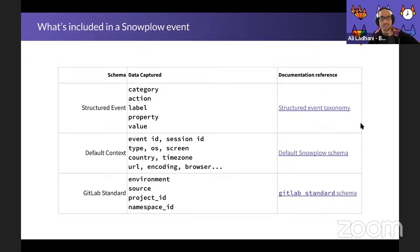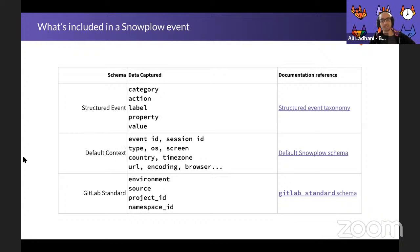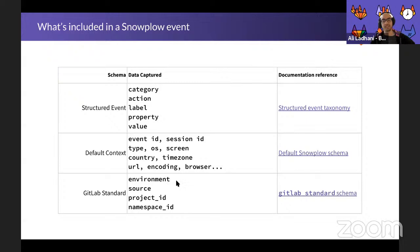What's included in a Snowplow event? When you're defining an event, you have five different structured event fields to work with, used to describe what's going on. We also have the default Snowplow context, which includes a bunch of data captured automatically — most of this is only available on the front end. For example, you'll get OS, screen size, time zone, URL, and browser information. The Product Intelligence team has also added some GitLab-specific fields: environment (production or staging), source (front end or back end), as well as metadata like project ID and namespace ID.